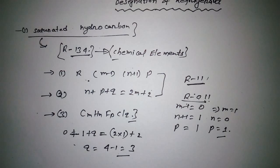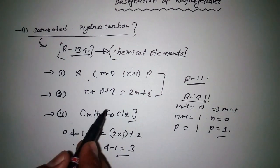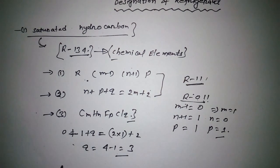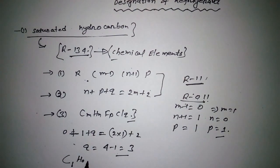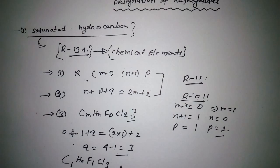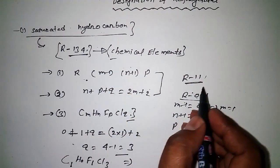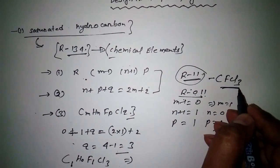Now it's easy—we just put the values together. m = 1, n = 0, F (for p) = 1, Cl (for q) = 3. So the chemical name for R-11 is CFCl₃.